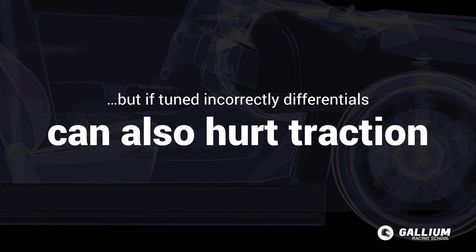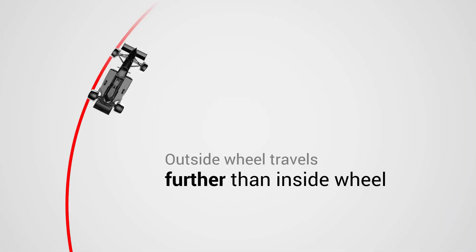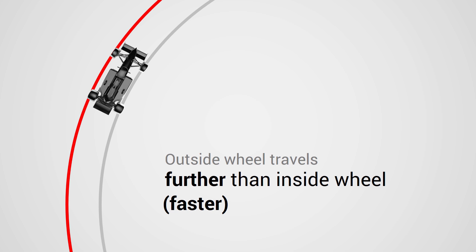To understand differentials we first need to consider how the drive wheels are moving relative to each other. While driving around corners the outside wheel travels further than the inside wheel. If the outside wheel is travelling further in the same amount of time then it must travel faster than the inside wheel. A differential allows this speed difference, which is vital to maintaining traction in the turn.